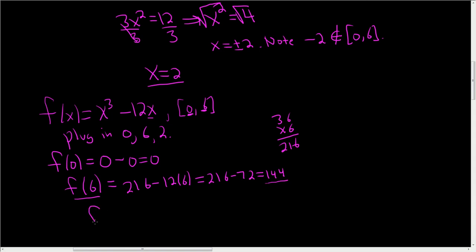And the last one to plug in is 2. You don't have to do them in order. You can do them in any order you want. So 2 cubed is 8 minus 12 times 2, which is 24. So 8 minus 24 is negative 16.